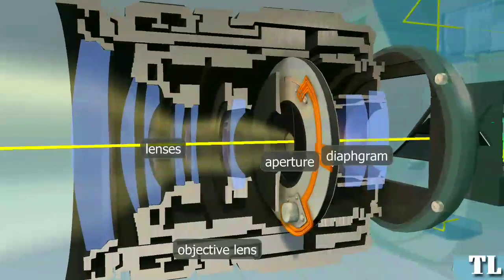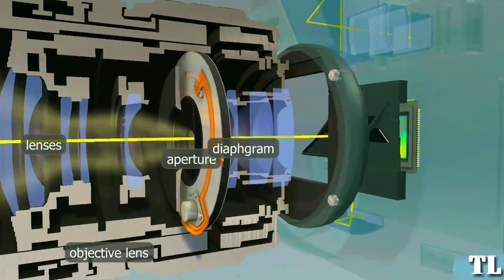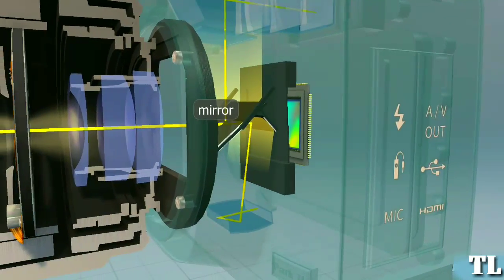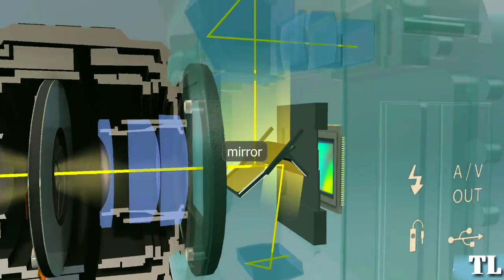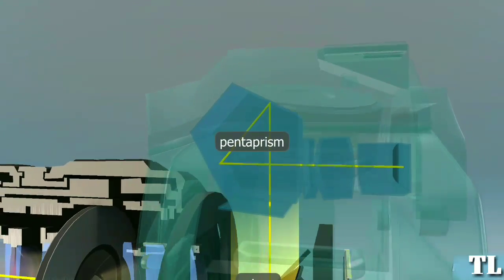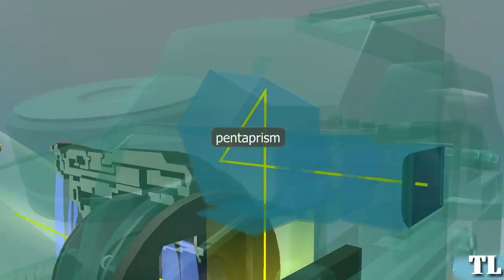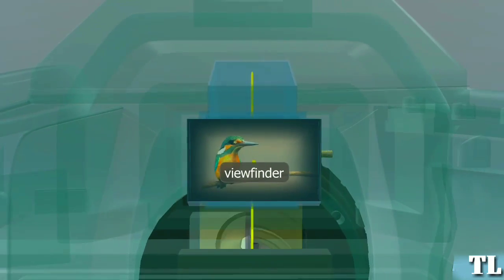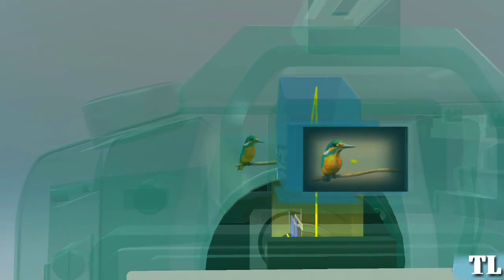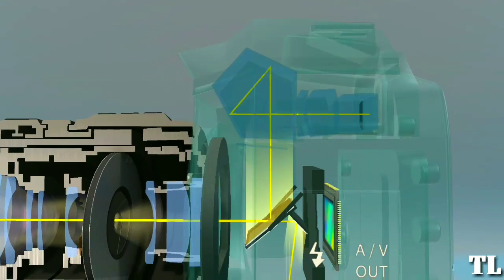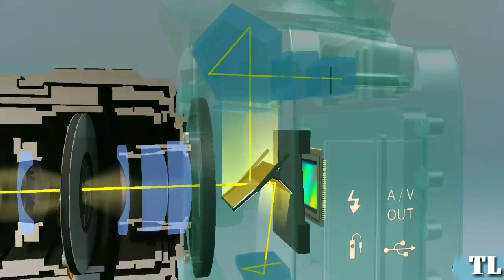In single lens reflex cameras, after light passes through the aperture, it reaches a mirror positioned at an angle to reflect it through a pentaprism to the viewfinder. The pentaprism ensures that the image we see in the viewfinder is not upside down. Some cameras have a semi-transparent mirror, with a secondary mirror behind it that is perpendicular to it. This secondary mirror directs part of the light towards a focusing screen, and then a sensor array to operate the autofocus system.